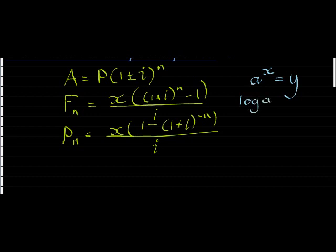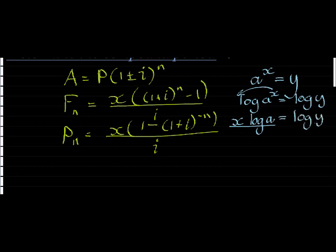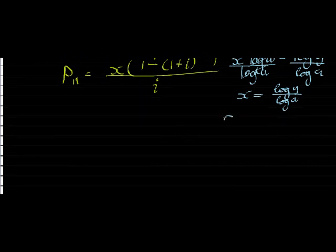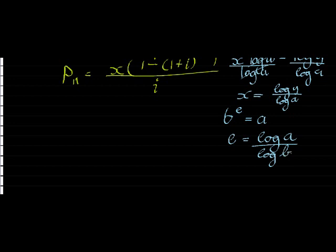Using logs, if I want to solve for x in an equation like a to the power of x equals y, I can take a log on both sides, and x multiplies to the front using log laws. Dividing both sides by log of a gives me the answer: x equals log of y divided by log of a. In general, when I have a base b with an exponent e equal to an answer a, then e equals log of a divided by log of b.